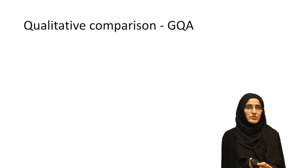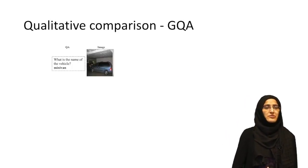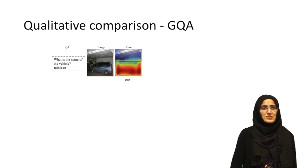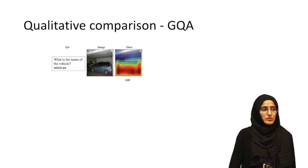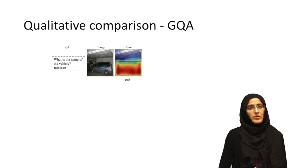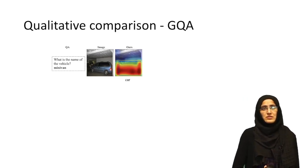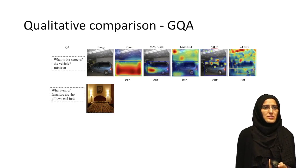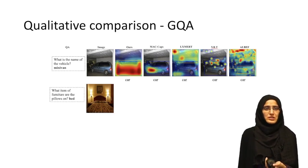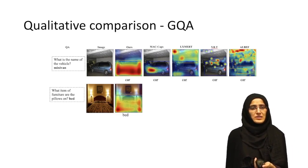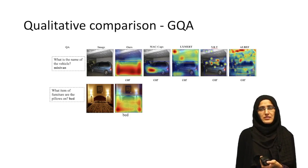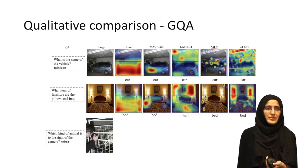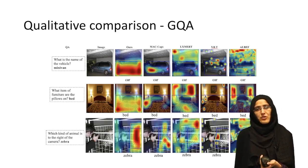Here we show qualitative results for GQA. For instance, the question is: what is the name of the vehicle? The ground truth answer is minivan; our system predicts car and shows the predicted bounding box — the blue box is the ground truth bounding box and the orange box is the predicted bounding box. In another example, the question is: what item of furniture are the pillows on? The correct answer is bed, and our system answers bed and localizes it correctly. Another example has the correct answer zebra, and our model is able to correctly localize it.